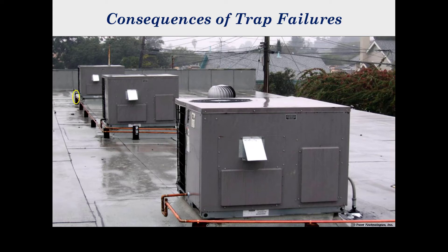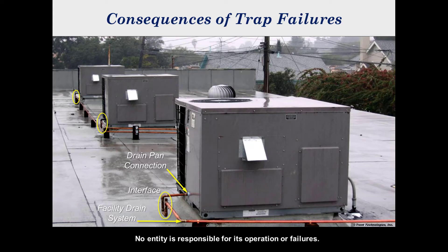Why trap drain systems that allow property damage and health threats are so widely used and unchallenged is explainable. The condensate drain system is a unique component in the total system — it is an interface between the drain pan connection and facility drain system for which no entity accepts responsibility for its operation or failures. Hence, there is little interest in improving drain system performance. The building owners and managers are the victims, while others stand to gain in the form of more service calls and higher than necessary equipment replacement rates.